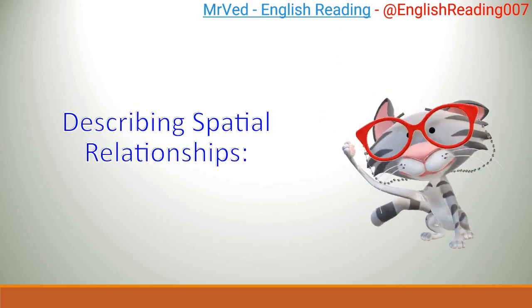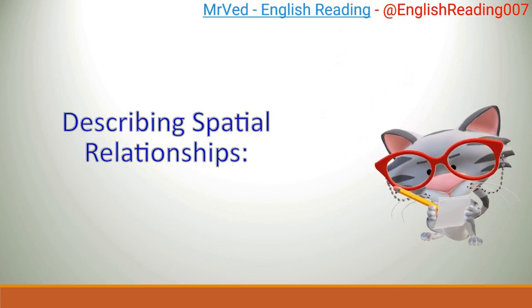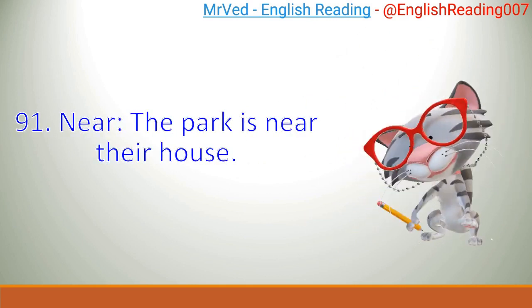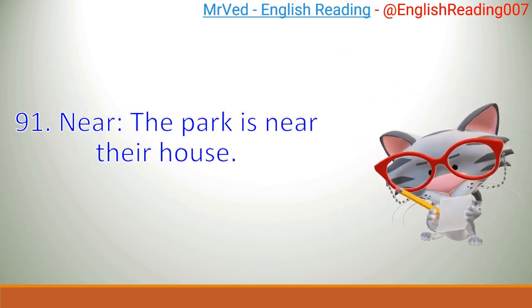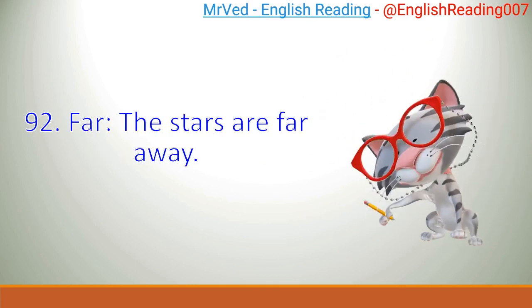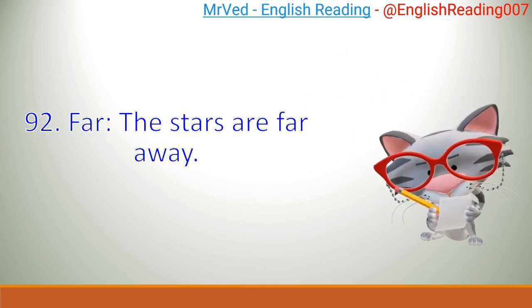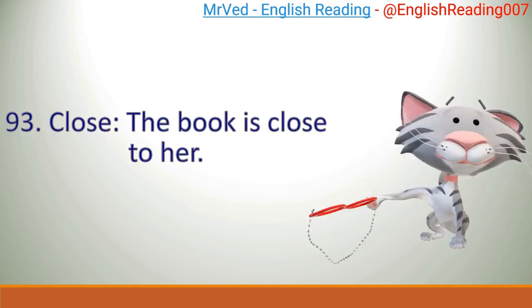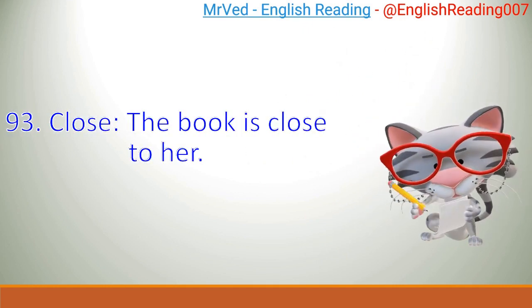Describing Spatial Relationships. 91. Near. The park is near their house. 92. Far. The stars are far away. 93. Close. The book is close to her.